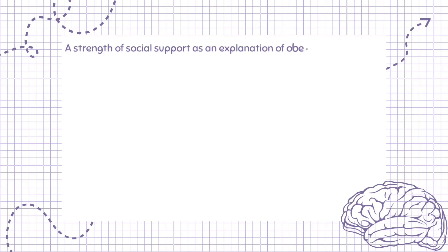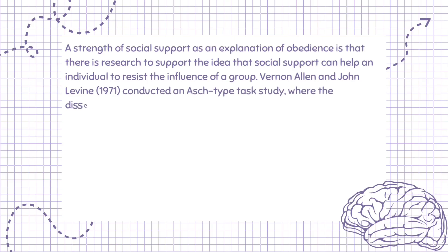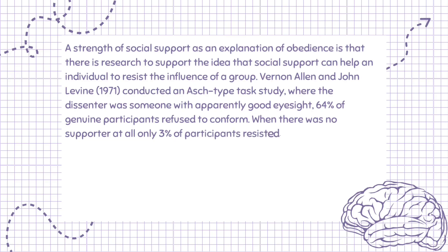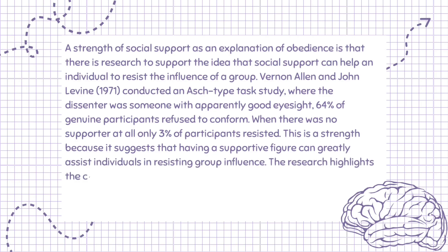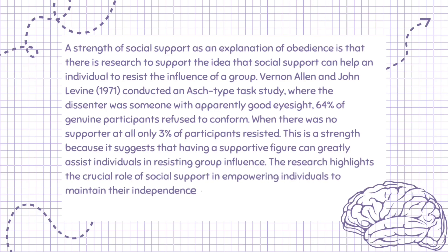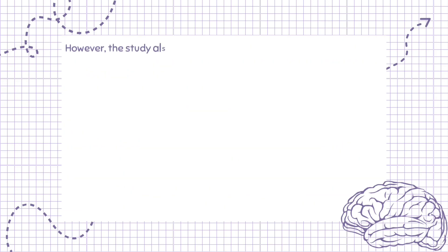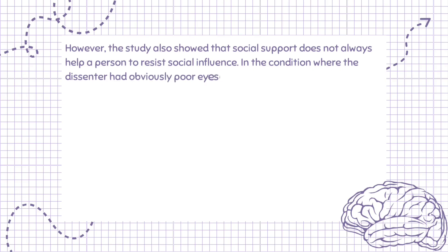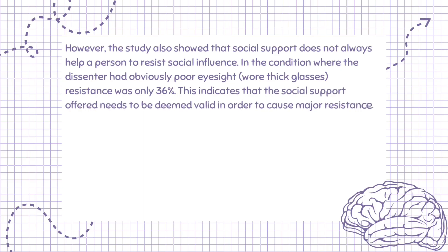A strength of social support as an explanation of resistance is that Vernon Allen and John Levine (1971) conducted an Asch-type task where the dissenter appeared to have good eyesight, and 64% of genuine participants refused to conform. When there was no supporter at all, only 3% resisted. This highlights the crucial role of social support in empowering individuals to maintain independence. However, when the dissenter had obviously poor eyesight and wore thick glasses, resistance dropped to only 36%, indicating that the social support offered needs to be deemed valid in order to cause major resistance.